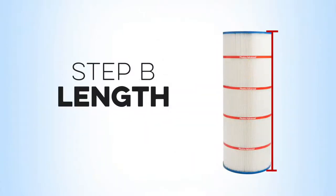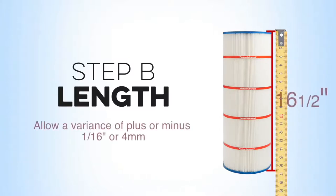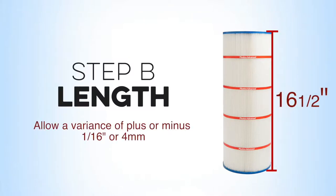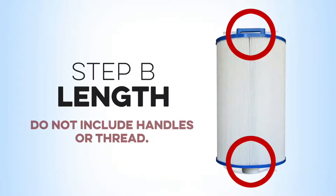Now measure the overall length of the cartridge. Take a ruler and measure from the top end cap to the bottom end cap along the edge of the cartridge. Only measure from end cap to end cap. Do not include handles or thread.